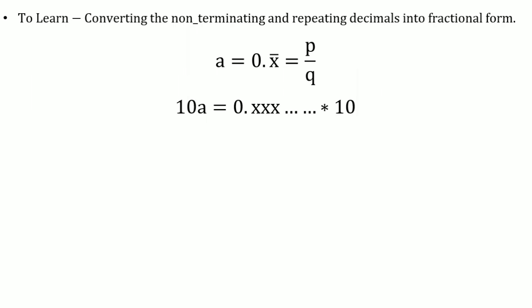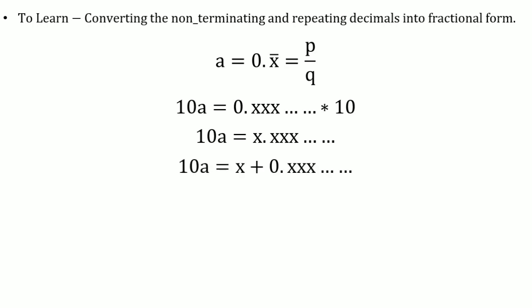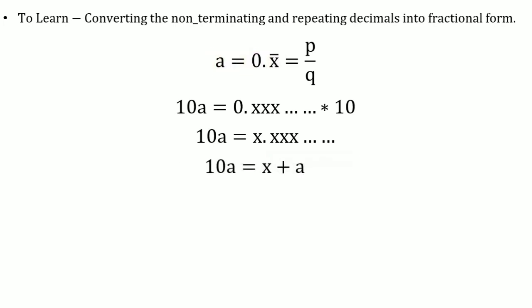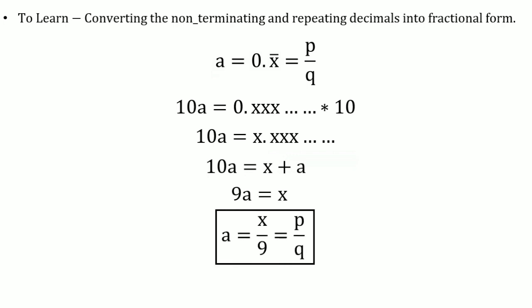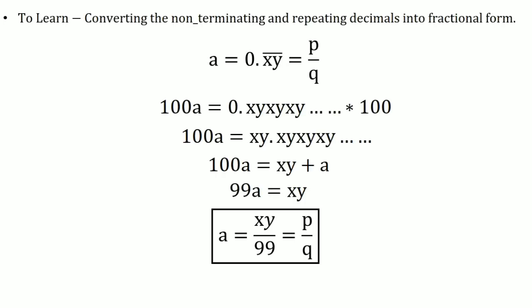So 10A equals x plus 0.x̄, and since 0.x̄ repeats to infinity, it equals A. Therefore 9A = x, so A = x/9, which is in the form p/q. Using the same method but multiplying both sides by 100 for a double repeating decimal, we get A = xy/99.